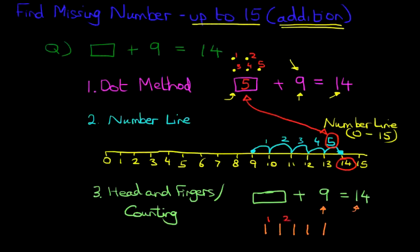We've got 1, 2, 3, 4, 5. So you should be holding out 5 fingers. And that is our answer. 5. That is our answer. It is 5. So it's 5 plus 9 equals 14.